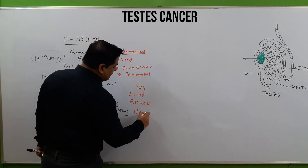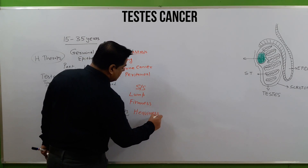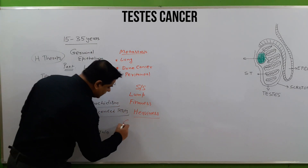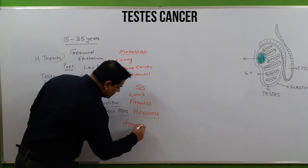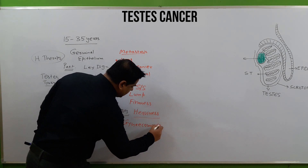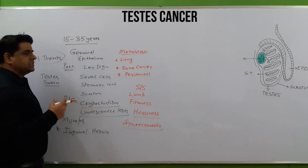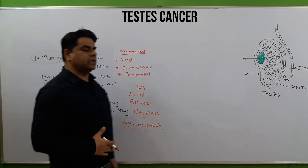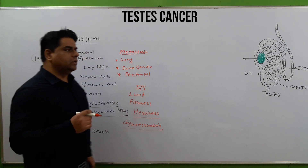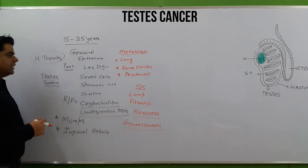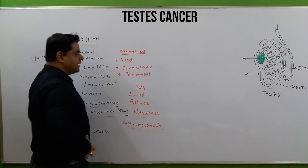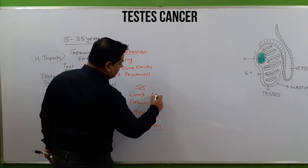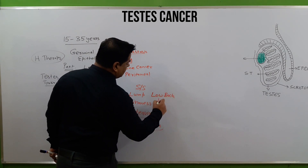Signs and symptoms to watch for include testes firmness, feeling of heaviness in the testes or scrotum, gynecomastia — the appearance of breast-like tissue in males — as well as pain in the abdomen, headache, nausea, and vomiting.